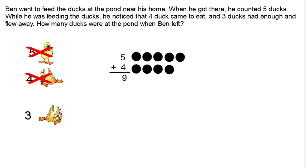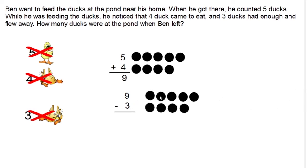To keep things organized, we've dealt with those four. But we're not yet done because while Ben was feeding the ducks, three had enough and left. There are nine total but three left, so once again I'm going to use the make a picture strategy. Nine minus three: I'll start with my ten frame of nine and X out the three that flew away. Now let's count how many ducks were still at the pond when Ben left: one, two, three, four, five, six. Six ducks remained at the pond.